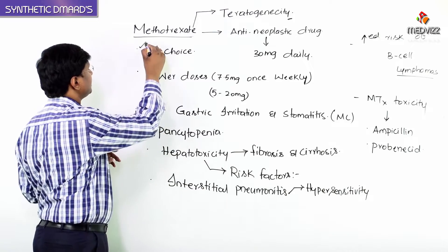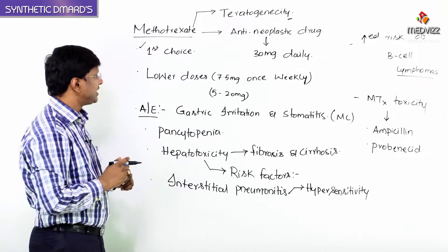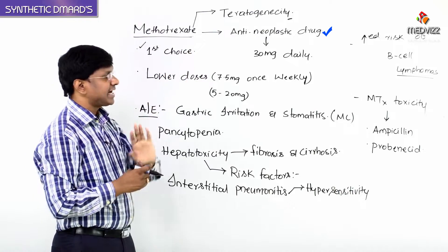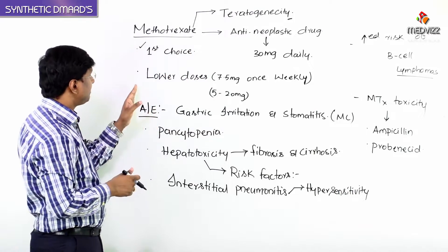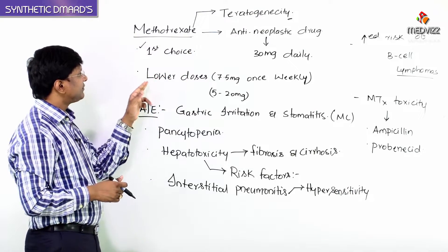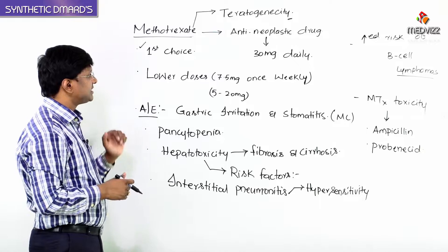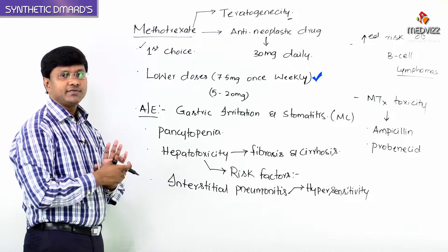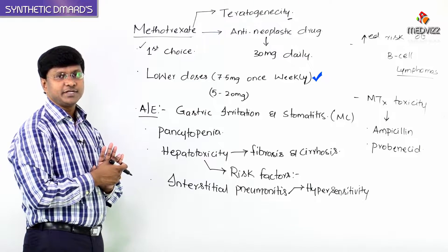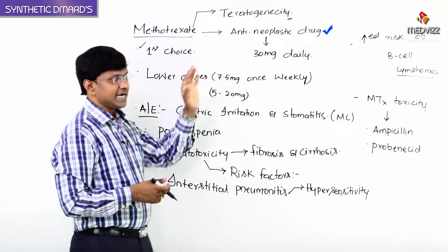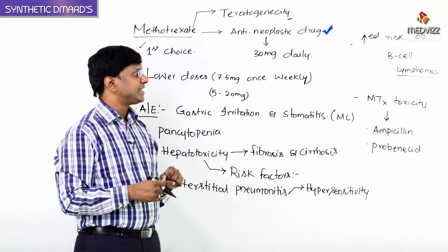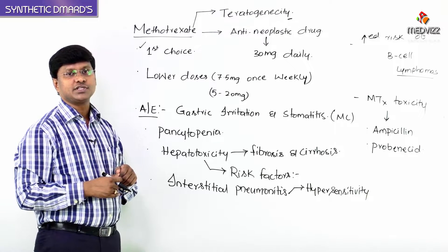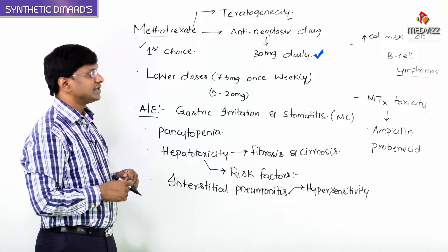To summarize: methotrexate is the first choice DMARD in rheumatoid arthritis. It is also an anti-neoplastic drug, but in RA it is used at lower doses of 7.5 milligrams once weekly (range 5–20 mg weekly), whereas as an anti-cancer drug it is used at 30 milligrams daily.